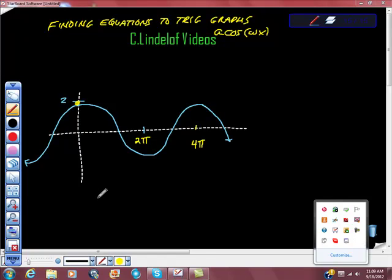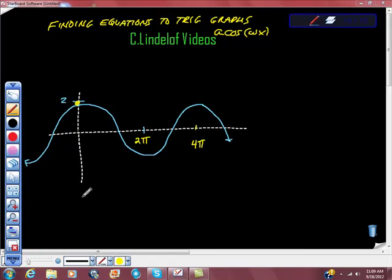Finding equations to trig graphs. This is a cosine omega times x. So we're supposed to find the equation of this graph.